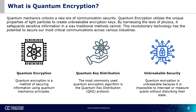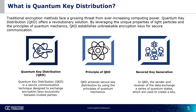Moreover, quantum encryption could theoretically detect any interception attempts, further enhancing its security. Unlike traditional encryption methods, which transmit keys over public networks, QKD ensures secure key distribution exclusively between trusted parties. By leveraging the principles of quantum mechanics, QKD exchanges quantum states between sender and receiver to generate a secure key. Any attempt to intercept these quantum states would disrupt the communication, allowing for the detection of eavesdropping. In essence, QKD revolutionizes key distribution by leveraging quantum mechanics to guarantee unmatched security.